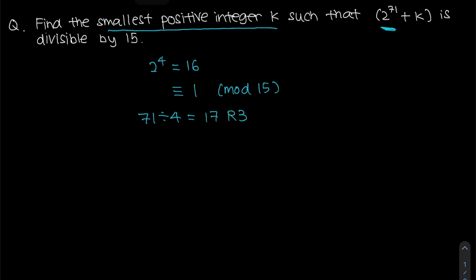What this also means is that your 2 to the power of 71 is actually equal to 2 to the power of 4 a total of 17 times, as well as another 2 to the power of 3.